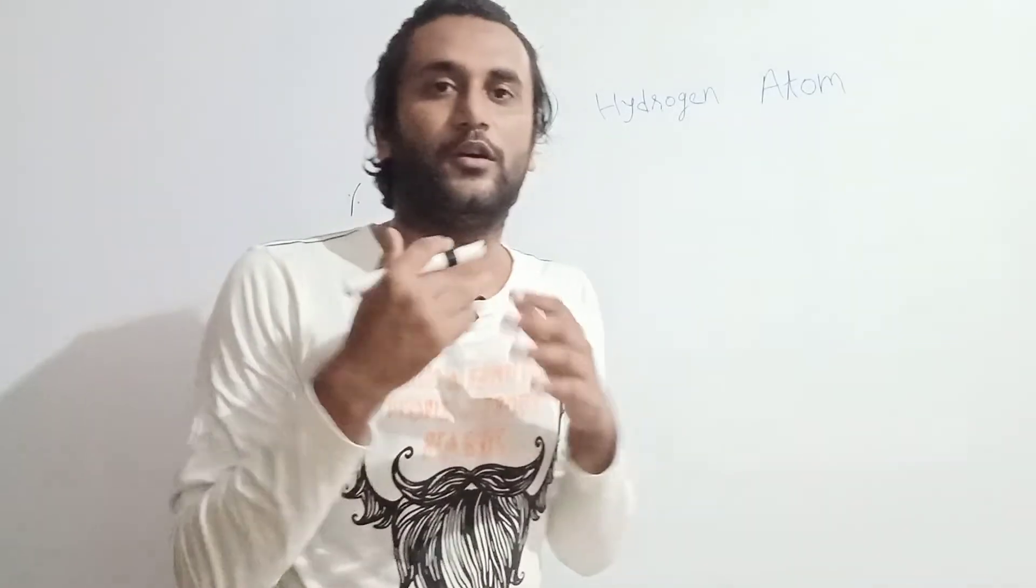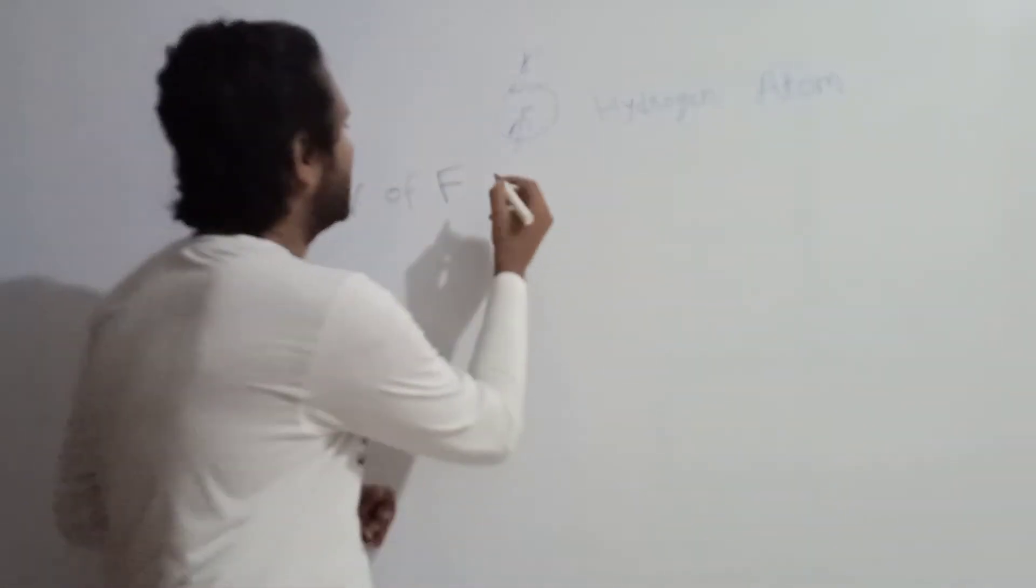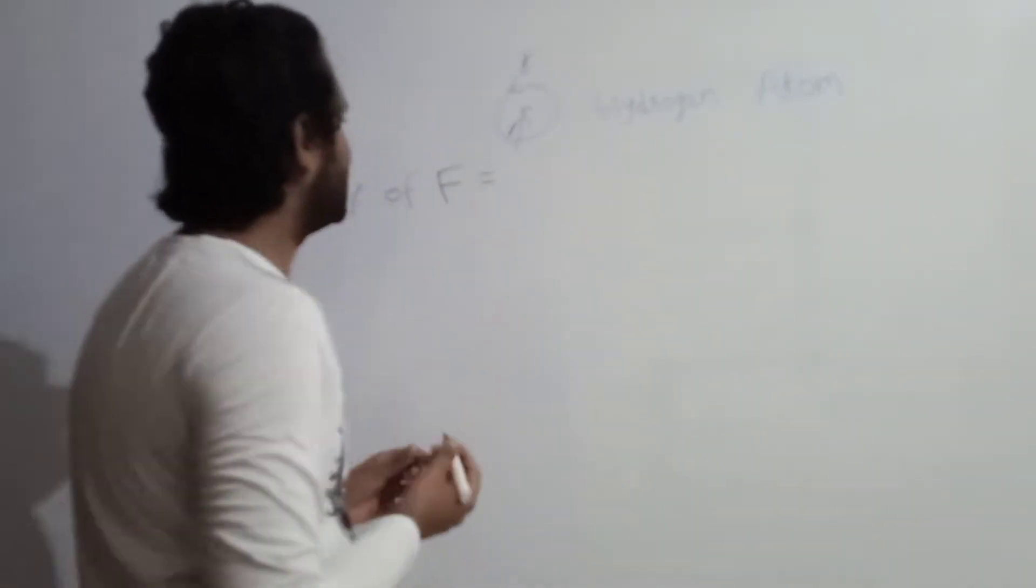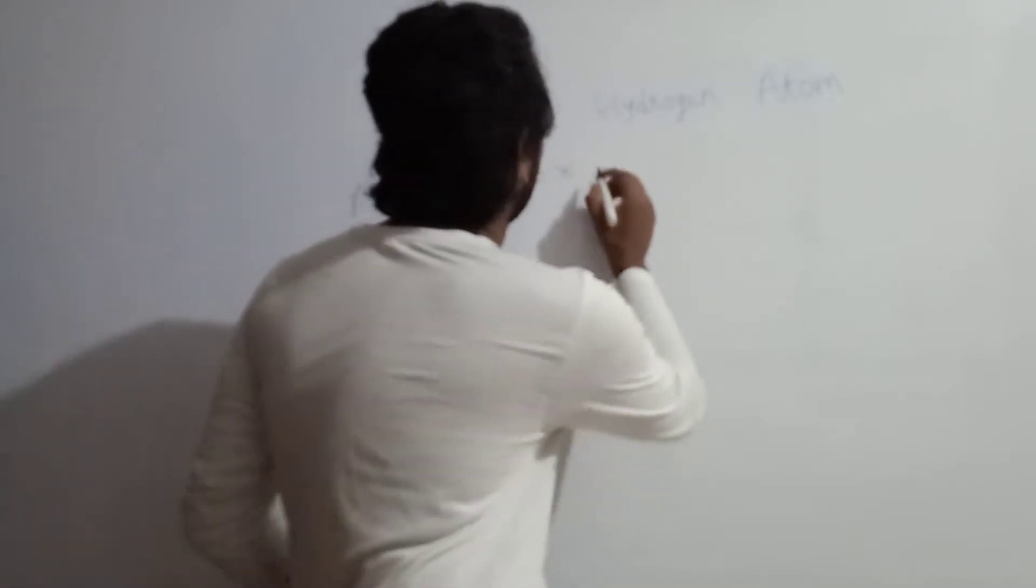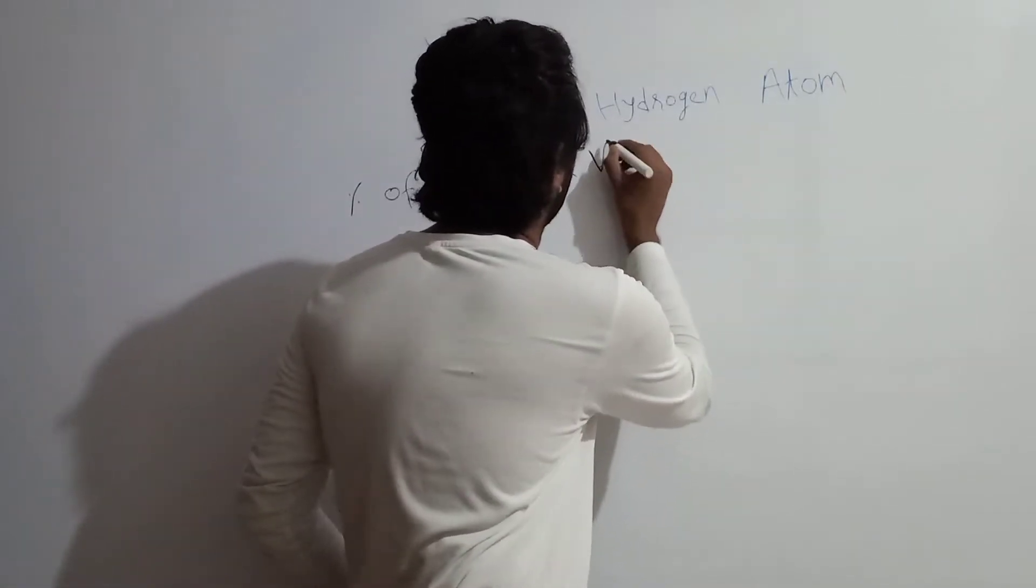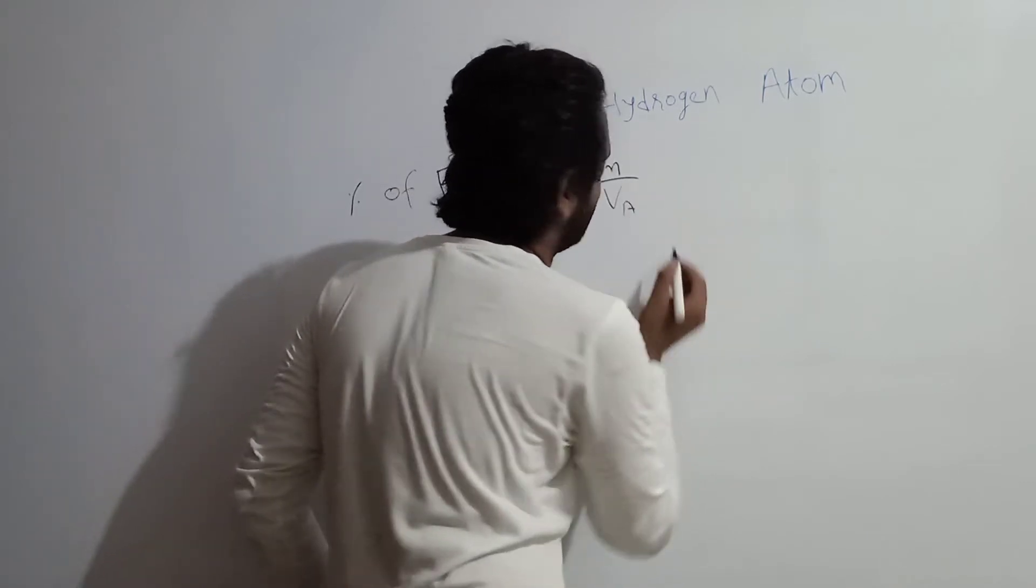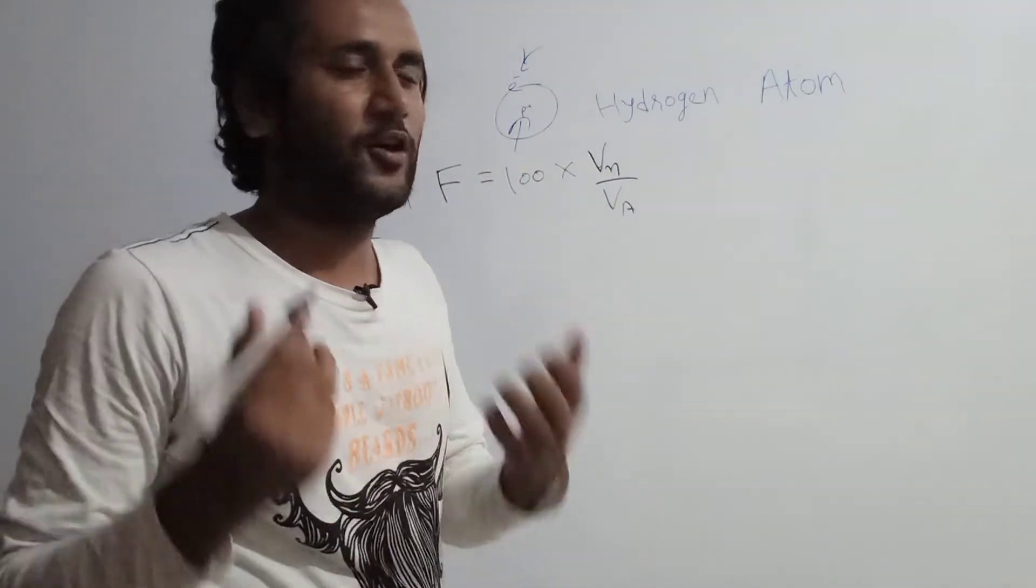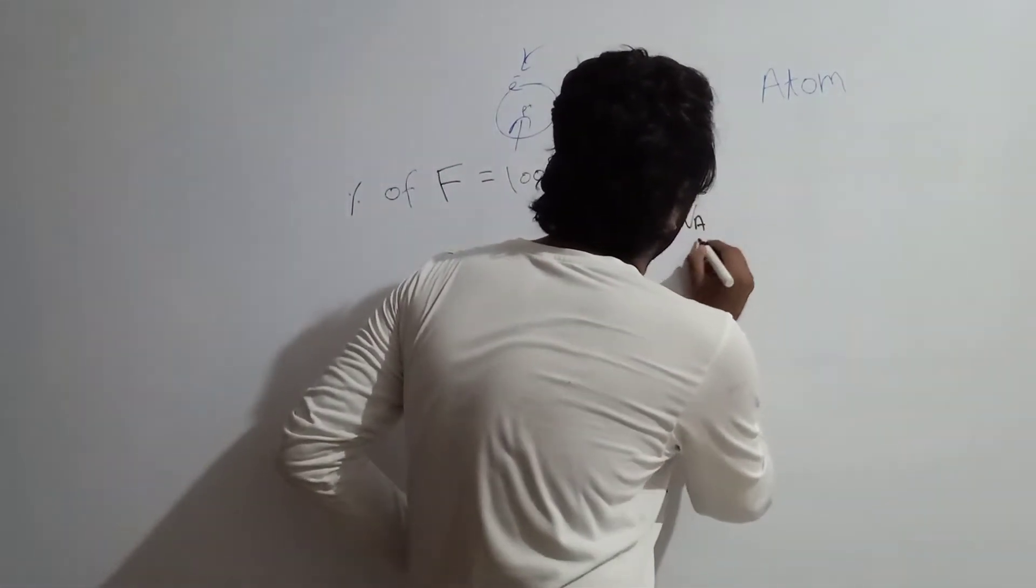How much percentage of hydrogen atom is filled? Let us calculate. Percentage of fullness is equal to 100 into volume of nucleus by volume of atom. So as you all know, volume of atom by volume of nucleus is equal to 10^5.